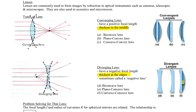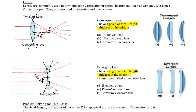Just like mirrors, converging lenses have a positive focal length and diverging lenses have a negative focal length. The focal length is the distance from the center of the lens to the focal point. For a converging lens it's positive — the focal point is behind the lens — and for a diverging lens it's negative, with the focal point in front of the lens. That's different from mirrors.